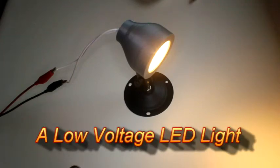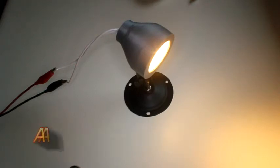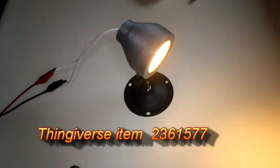This video will show you how to assemble a little low voltage light made from an MR16 bulb and some parts. The whole design is on Thingiverse, and if you look at the YouTube notes it'll tell you the Thingiverse link or the item number.